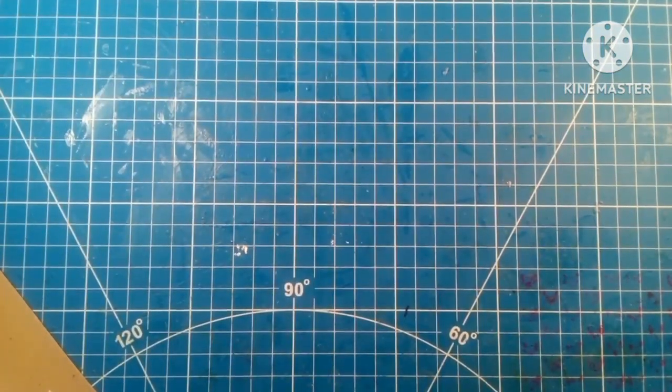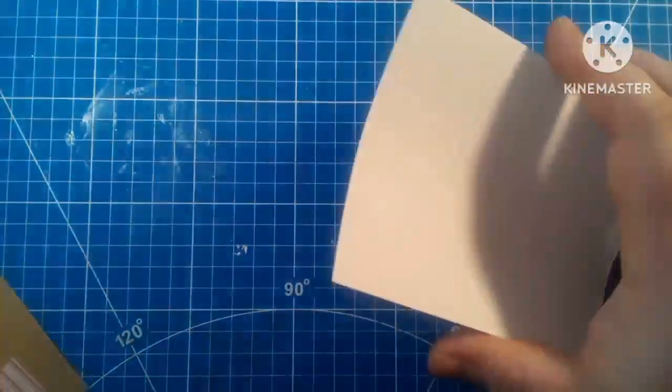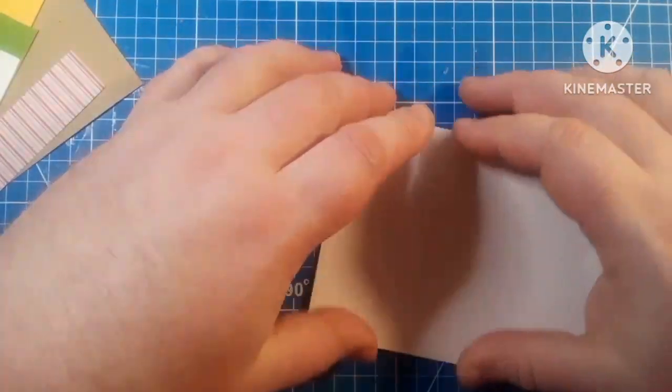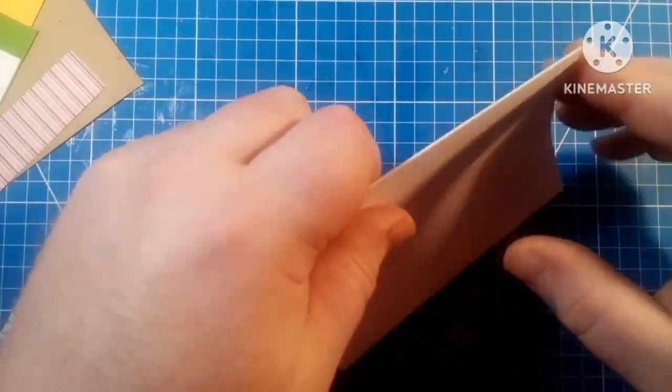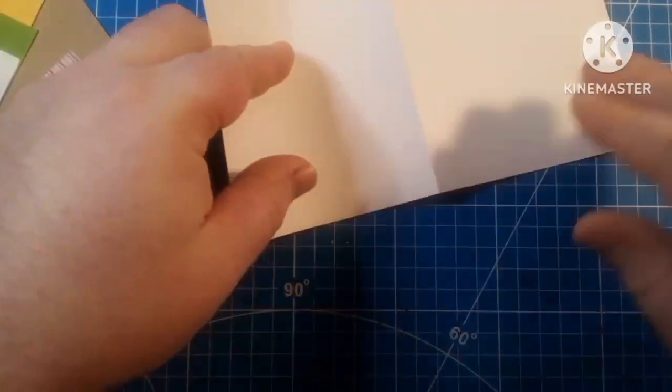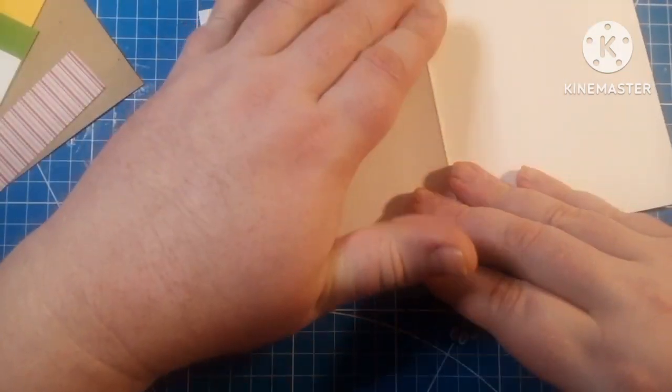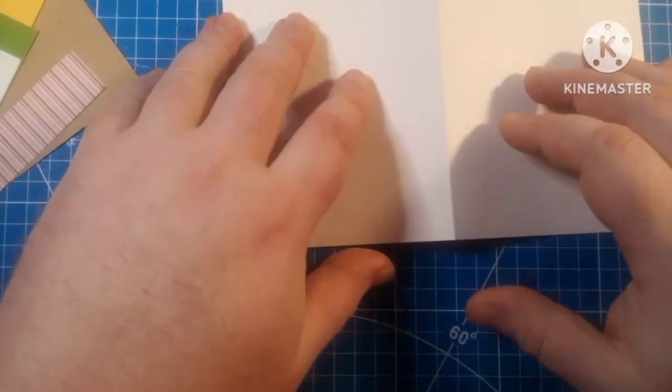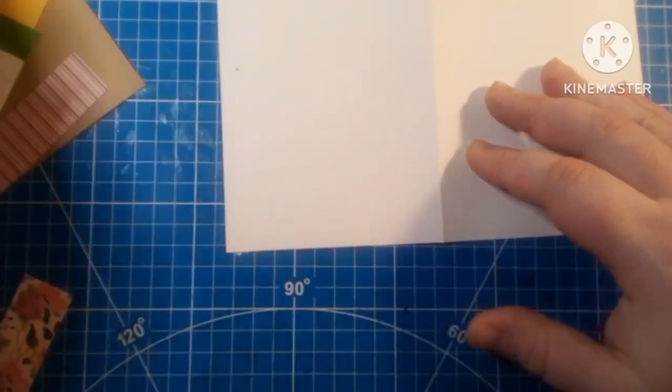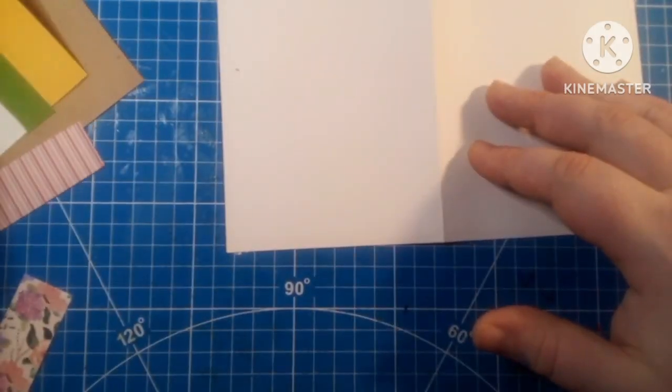So what you're going to need for this project is an A2 card, which is of course five and a half by eight and a half, basically kind of a half by 11 and a half, scored down the middle at four and a quarter inches. You got yourself an A2 card.